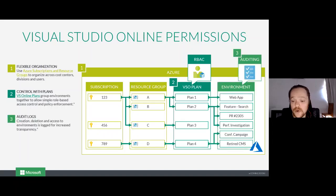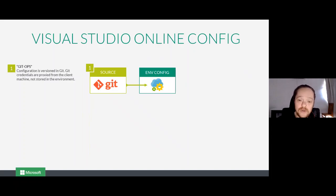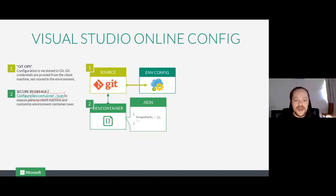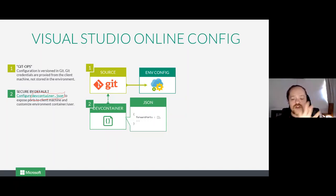You have audit logs so you can get auditing on exactly what and when people are spending. For config, GitHub is the new keyword — config is versioned in Git. Git credentials are proxied by the client, not stored in the environment. There's something called a dev container.json. Visual Studio Online takes the dev container.json and configures your VS instance for the specific config — for example, you can say install the Java plugin in Visual Studio and run it on a Docker container with Java.